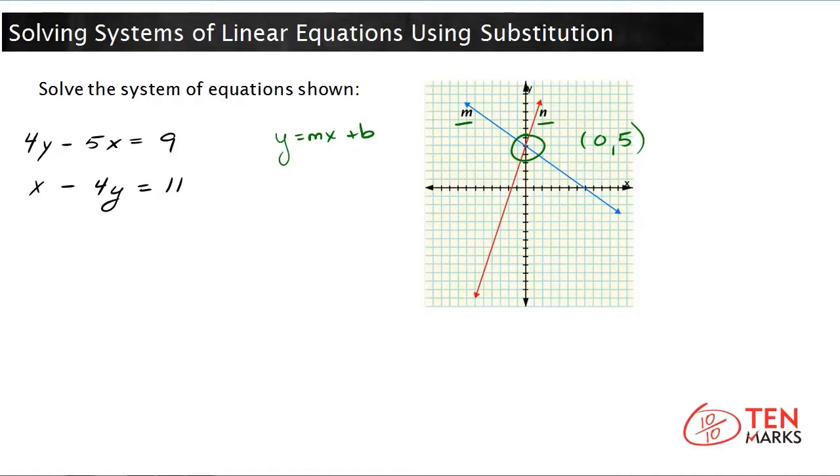Or maybe it is that where the two lines intersect is a fraction or a decimal, which is a really difficult thing to see precisely on a coordinate plane. And in these cases, you're going to want to solve the system algebraically.